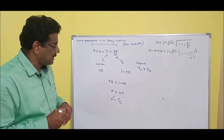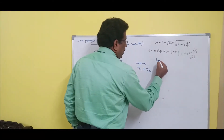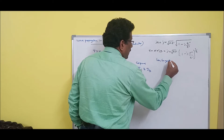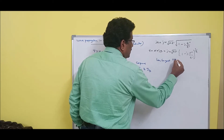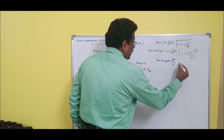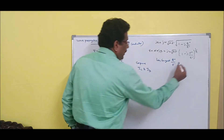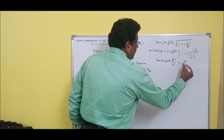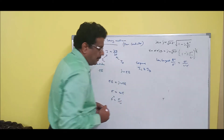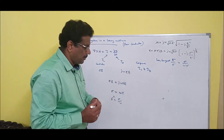From this, what is the loss tangent? If you recall, it was epsilon double-dash divided by epsilon dash. Right now, epsilon double-dash is nothing but sigma/omega. So the loss tangent will be sigma divided by omega*epsilon-dash. Try to remember this.